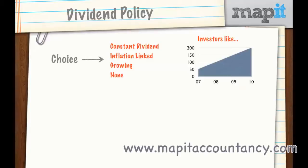The choices are varied and in an exam question you may have to assess what the current dividend policy is and suggest a better one. Options include a constant dividend, inflation linked, growing, linked to earnings, or no dividend or a reduced dividend depending on what's happening with the business. You may be asked to assess what a business is doing now and what they could do in the future.